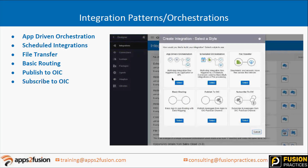Let's take an example of an ESS job. When you are submitting a scheduled job, or in EBS a concurrent program, you have parameters. As soon as you click submit, you select the parameters and then you submit. That kind of integration we are building here — for our integration with parameters, it is called app-driven. For this integration pattern to work, there has to be some parameter values given to initiate this integration.